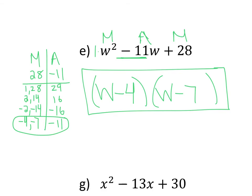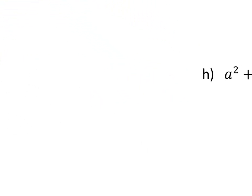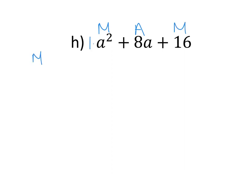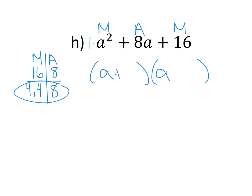Let's take a look at letter H. Again, I'm going to label it. I'm going to check for descending order, standard form, which it is. And then label it M-A-M. 1 being the leading coefficient. Multiply together your M's. You get 16. And your A is 8. 16. 4 times 4 equals 16. And when you add them, you get 8. So I know that's my winning pair. Variable is A. And it's positive 4, positive 4.